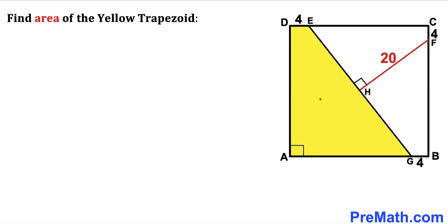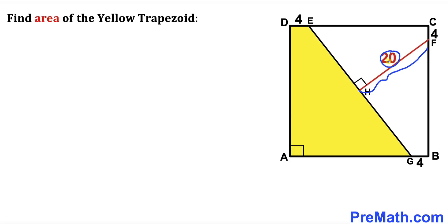Welcome to PreMath. In this video we have got this yellow shaded trapezoid AGED fully inscribed in a square ABCD, as you can see in this diagram, such that segments DE, CF, and GB are 4 units each. Moreover, segment HF is perpendicular to segment EG, and segment HF is 20 units long. Our task is to calculate the area of this yellow shaded trapezoid.